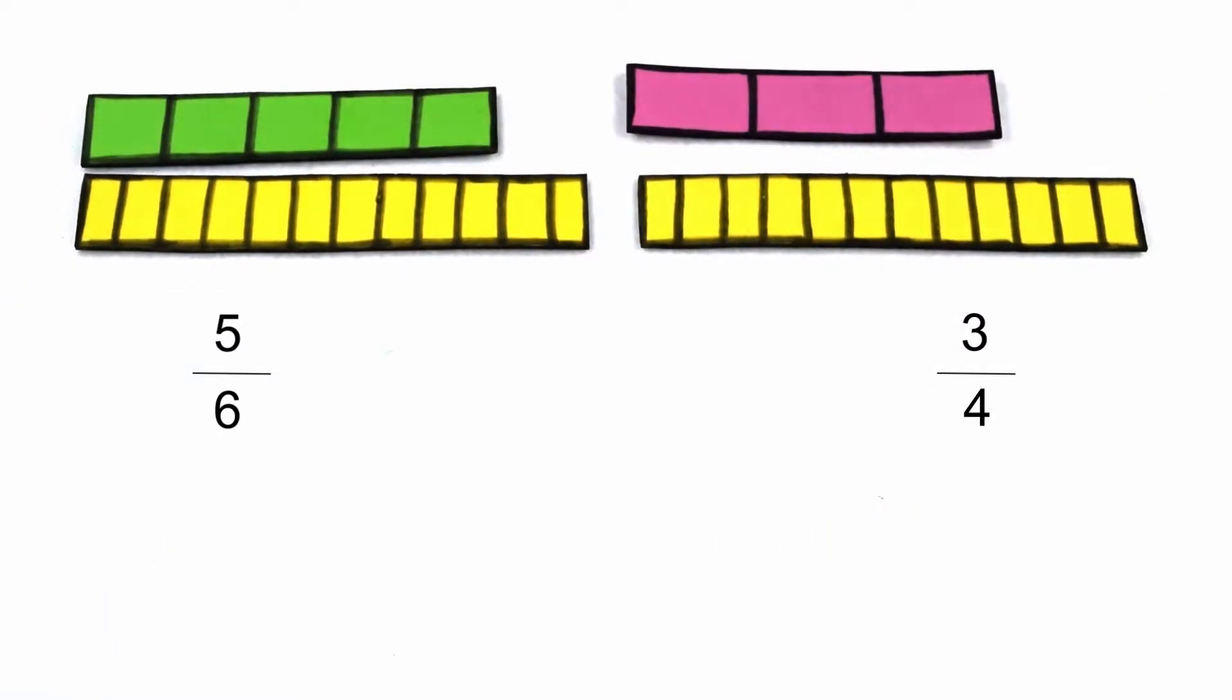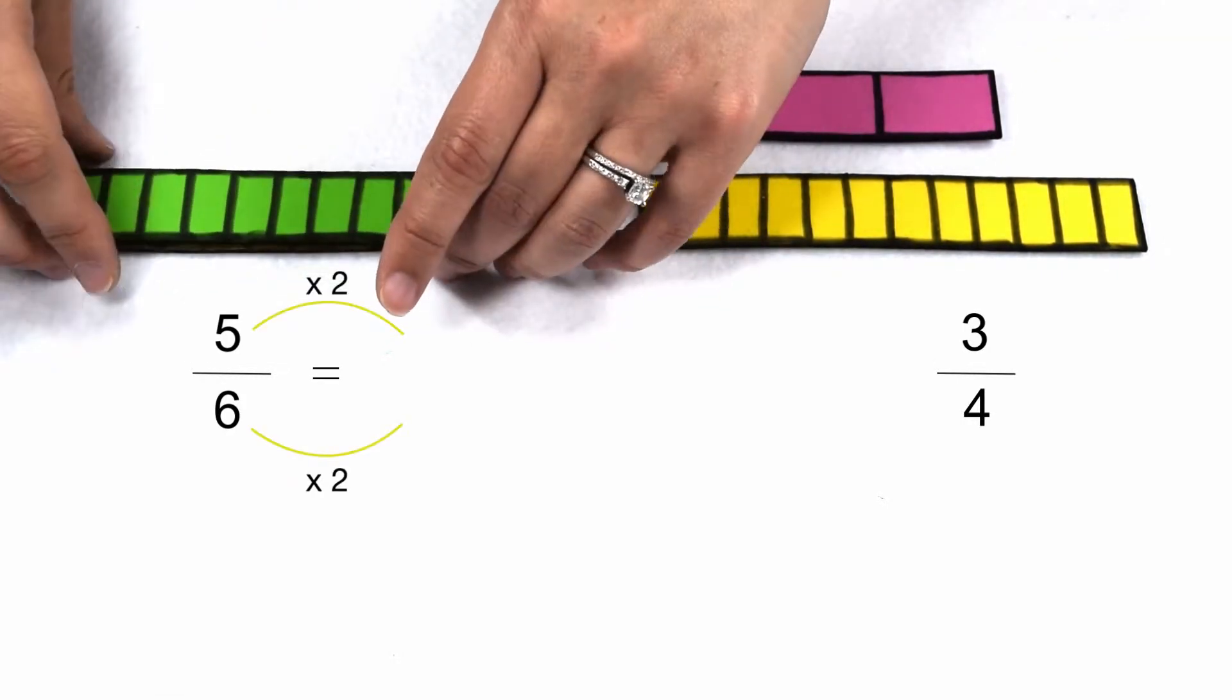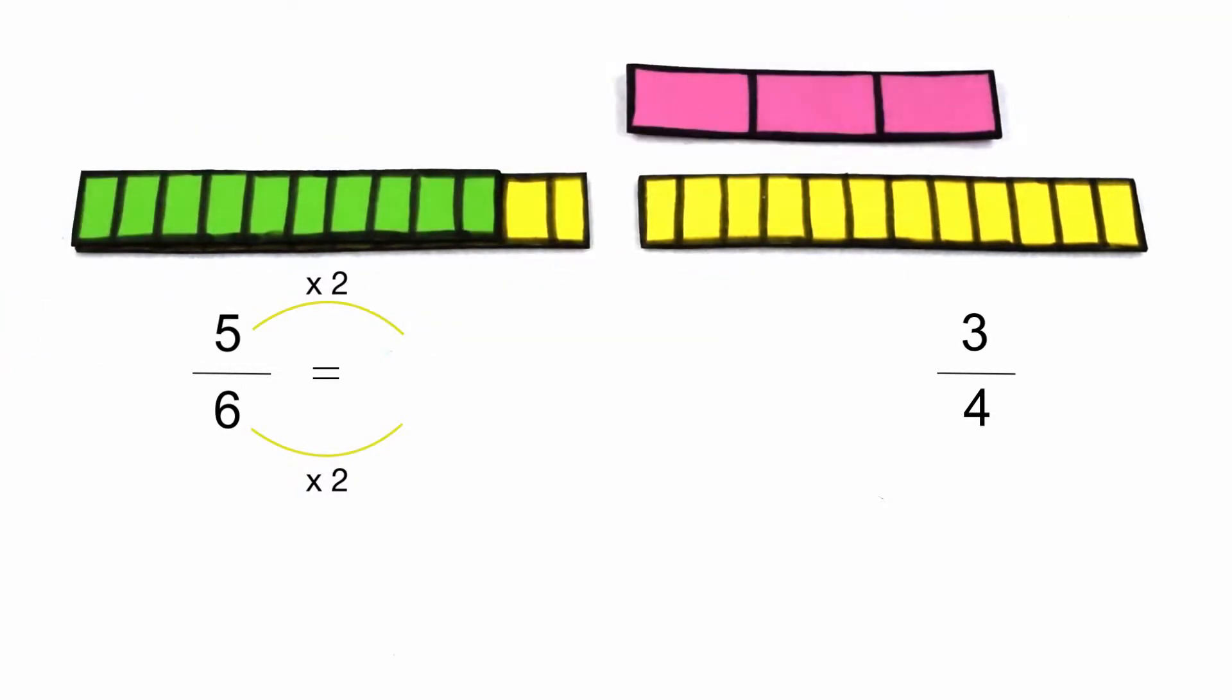Let's start by changing 5/6. To get from 6 to 12, I need to multiply by 2, so that means I need to multiply my 5 by 2 as well. 5 times 2 gives me 10, so 5/6 becomes 10 twelfths.